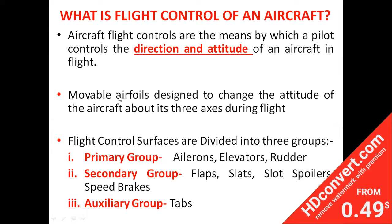Flight controls are movable aerofoils designed to change the attitude of the aircraft about its three axes during flight. Flight control surfaces are divided into three groups: primary, secondary, and auxiliary.